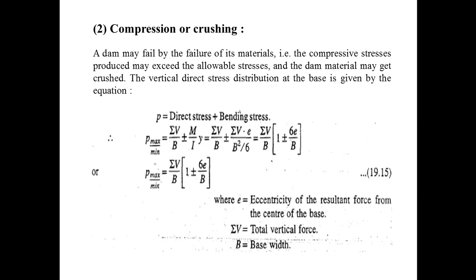The vertical direct stress distribution at the base is given by the equation: P equals direct stress plus bending stress. The total direct stress P, which may be maximum or minimum, is equal to ΣV/B ± MY/I.